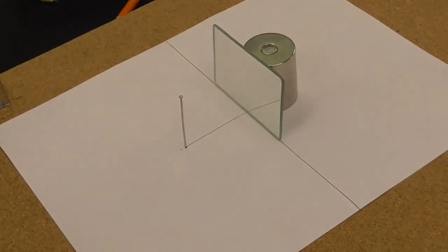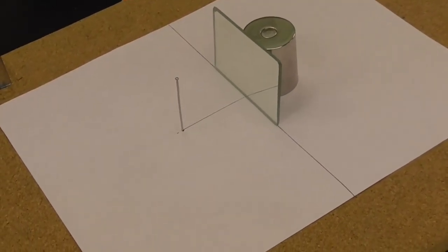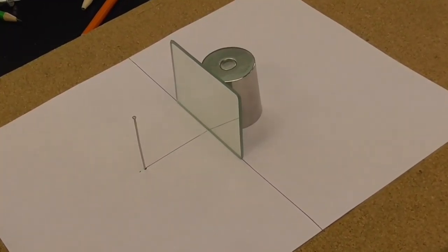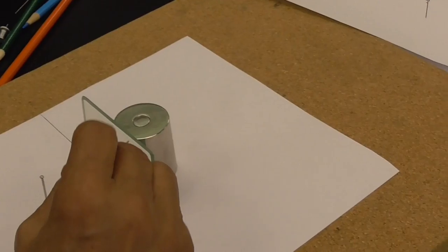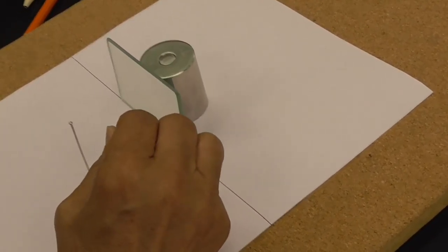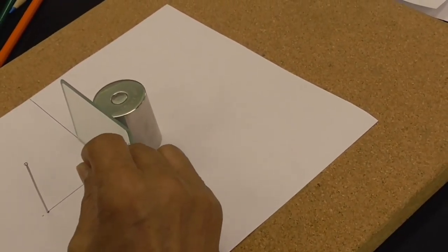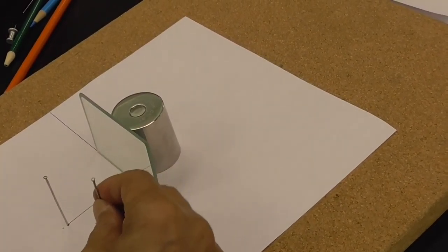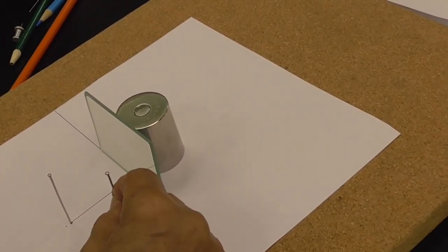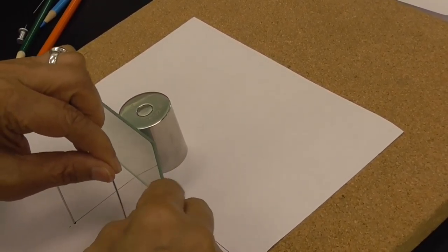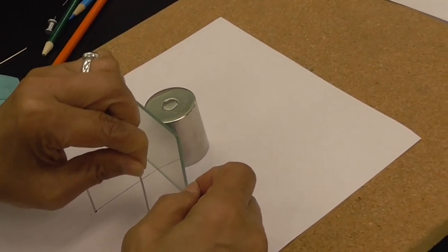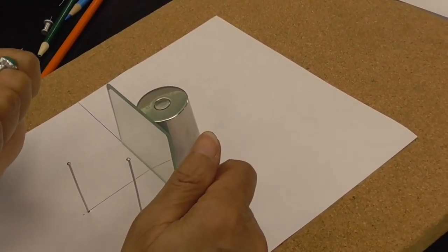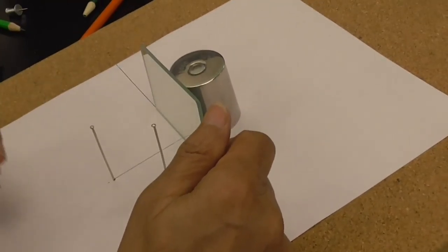So we need to put our mirror here. We use our heavy object to lean our mirror against that. Now from the two sides, I'm going to look for the image of this pin inside the mirror. From this side, I'm going to close one of my eyes and try to put this exactly along the object that we have.